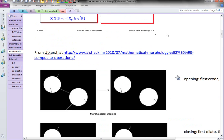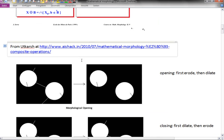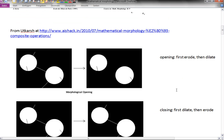I have a couple of beautiful images from Utkarsh, who is an undergraduate student and who has a blog. On the left is a sample image, and on the right hand side you see the result of a morphological opening, which is defined as first erode and then dilate.